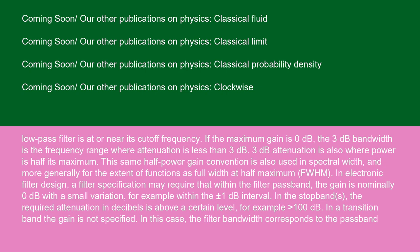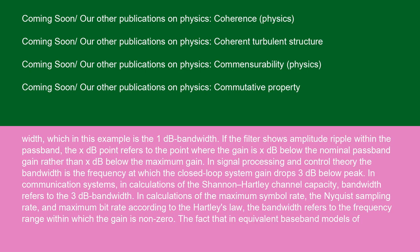In electronic filter design, a filter specification may require that within the filter passband, the gain is nominally 0 dB with a small variation, for example, within the plus or minus 1 dB interval. In the stop bands, the required attenuation in decibels is above a certain level, for example, greater than 100 dB. In a transition band, the gain is not specified. In this case, the filter bandwidth corresponds to the passband width which, in this example, is the 1 dB bandwidth. If the filter shows amplitude ripple within the passband, the X dB point refers to the point where the gain is X dB below the nominal passband gain, rather than X dB below the maximum gain.